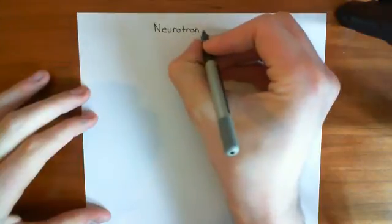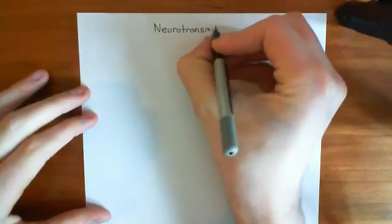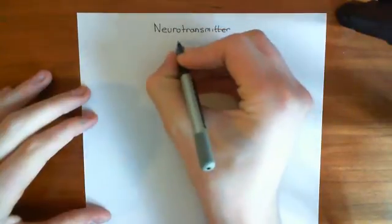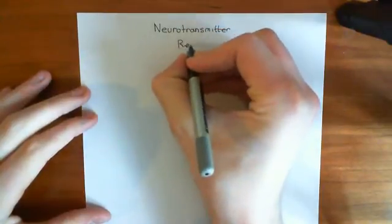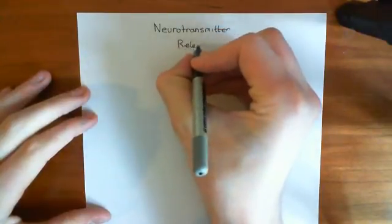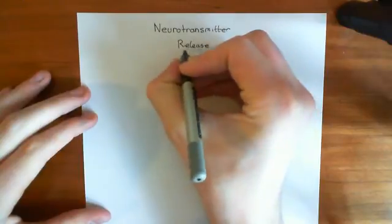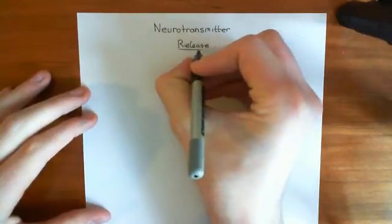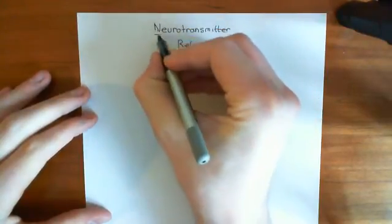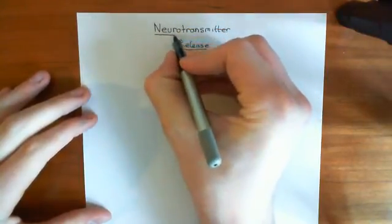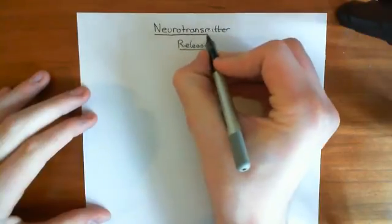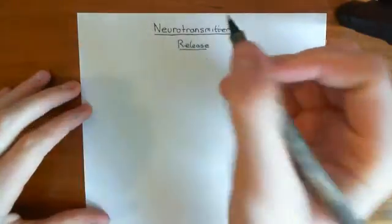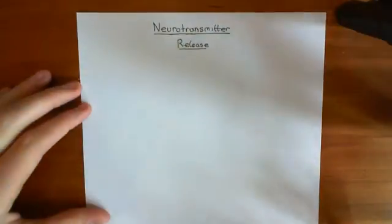We're not going to look at this process for any sort of specific neurotransmitter — we're going to keep it completely general. The neurotransmitter in question could be whatever comes to mind: noradrenaline, GABA, glutamate, dopamine, serotonin, whatever you want. It can be any of them, and the process is pretty much the same.